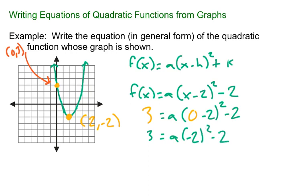Working in parentheses first, we would have that 3 is equal to a times (-2) squared minus 2. Negative 2 squared is 4. So 3 is equal to 4a minus 2. Add 2 to both sides.